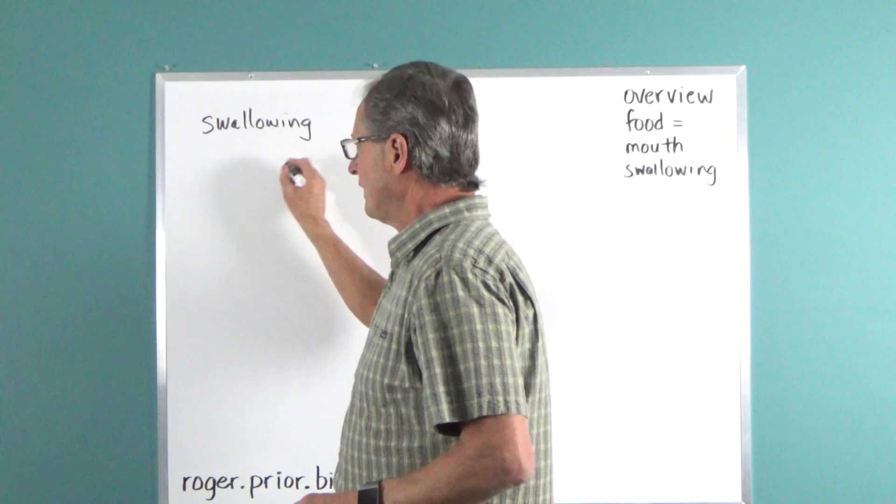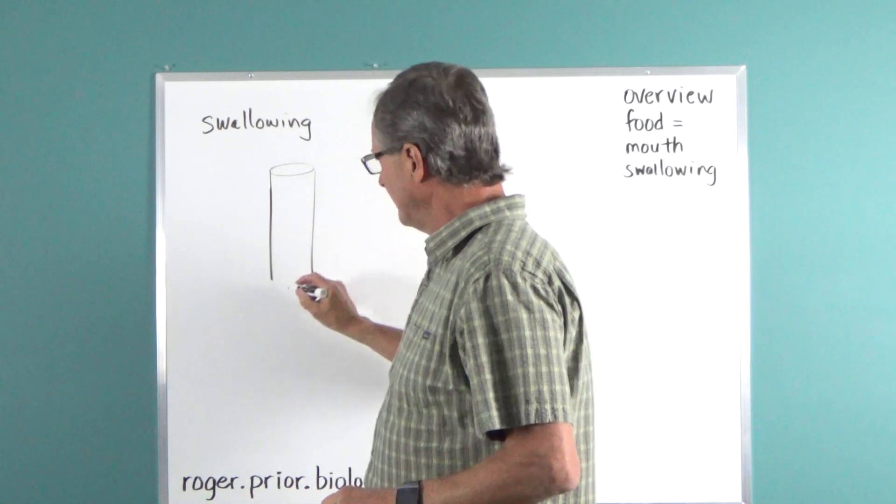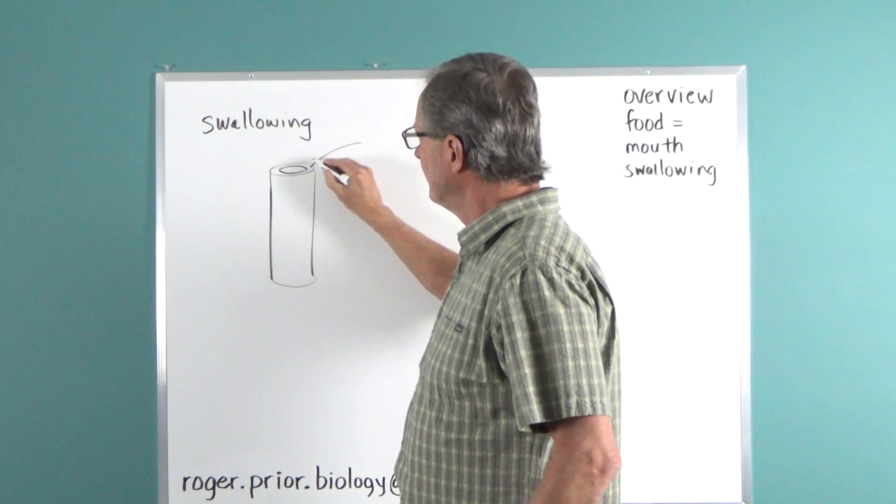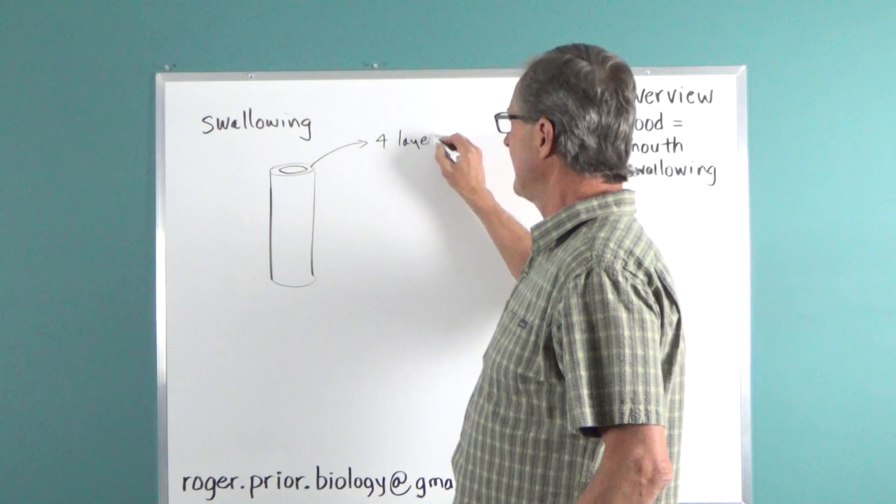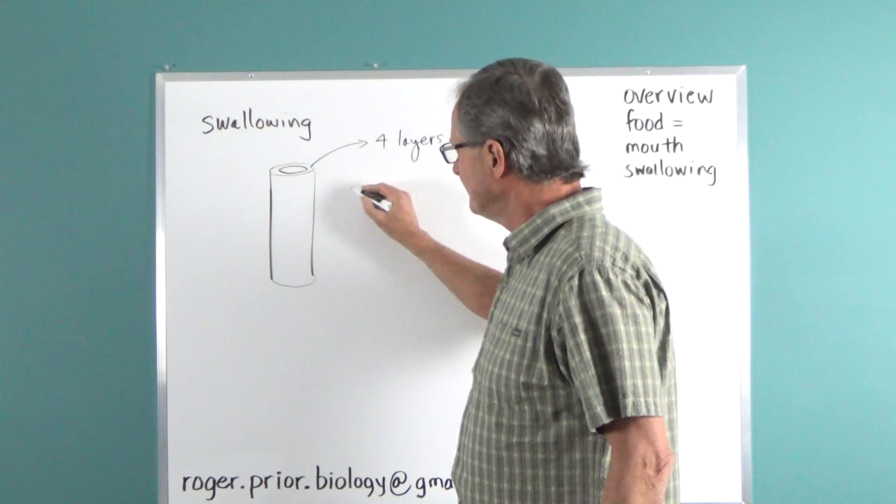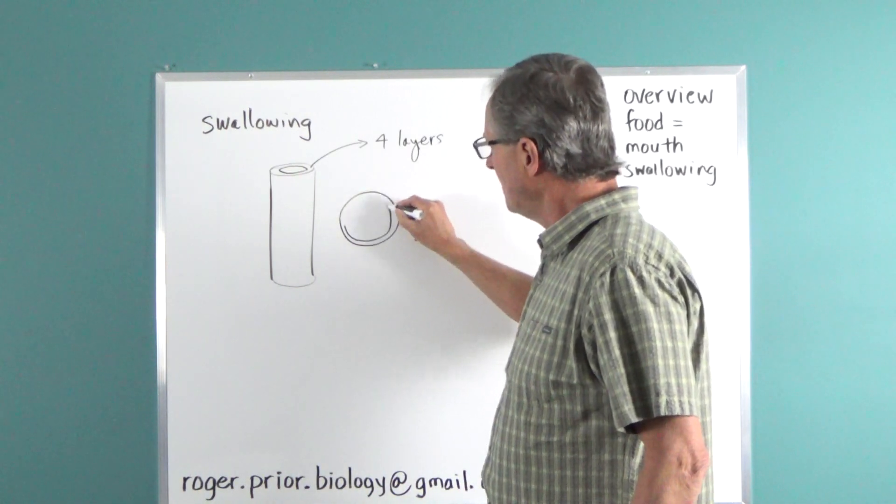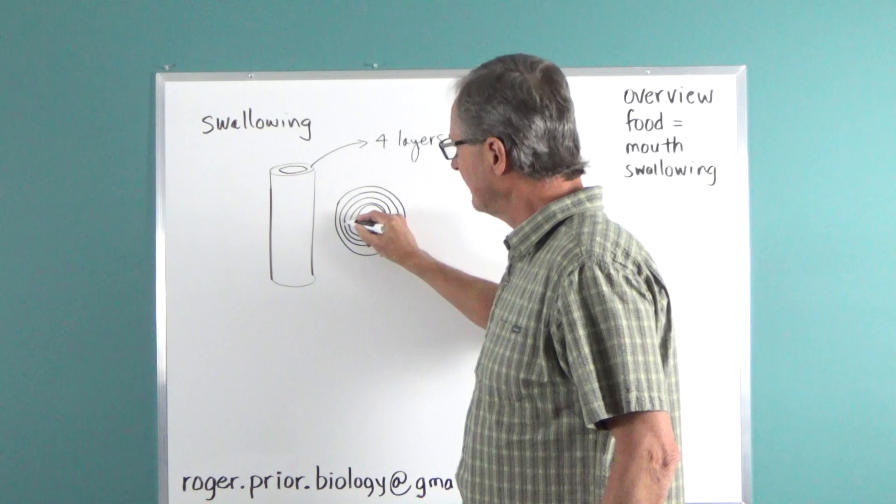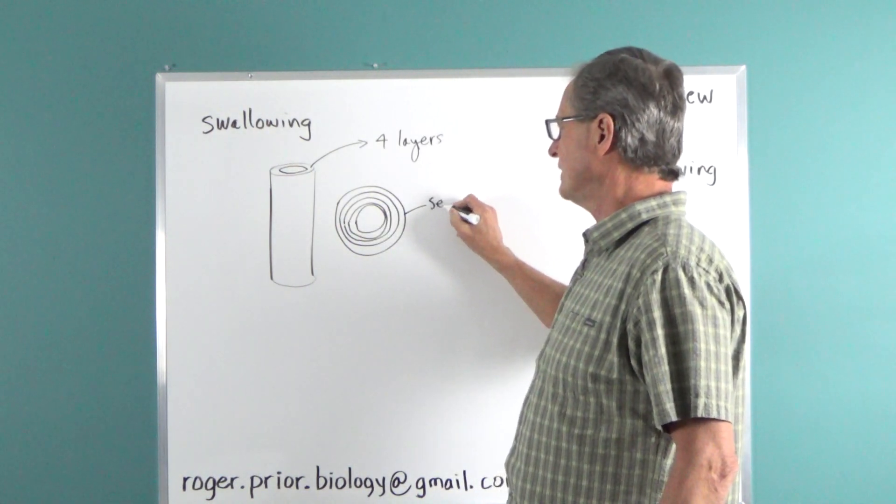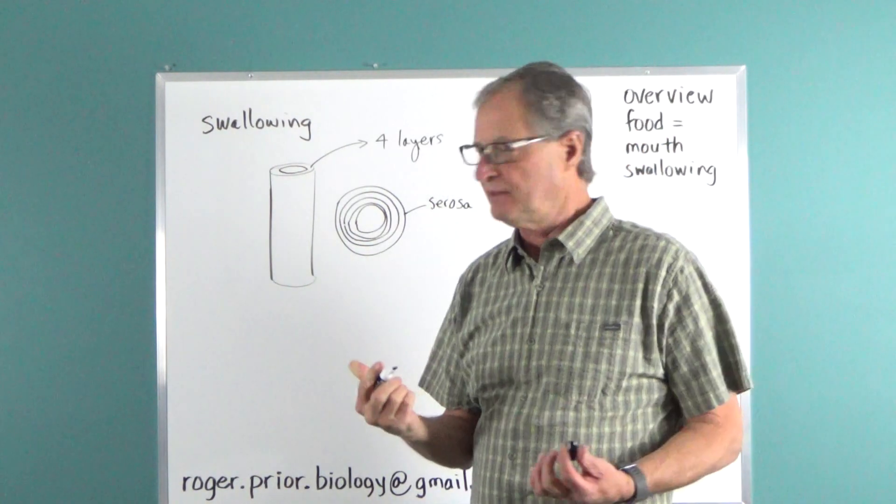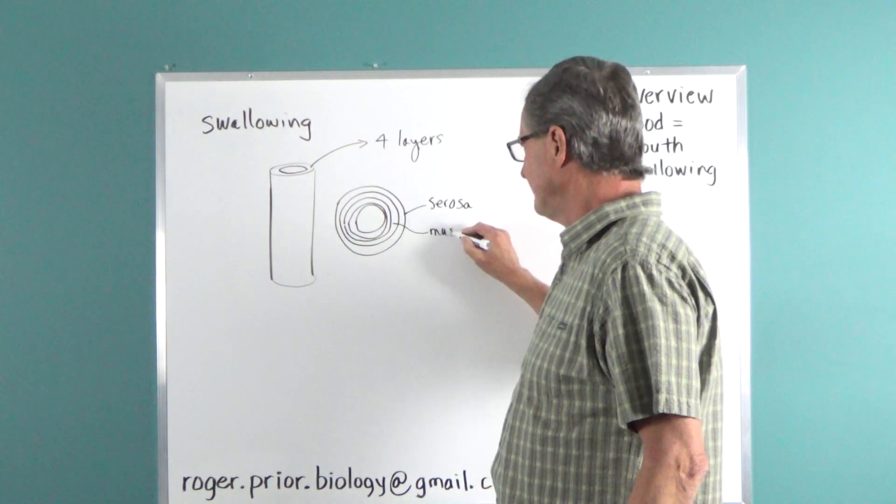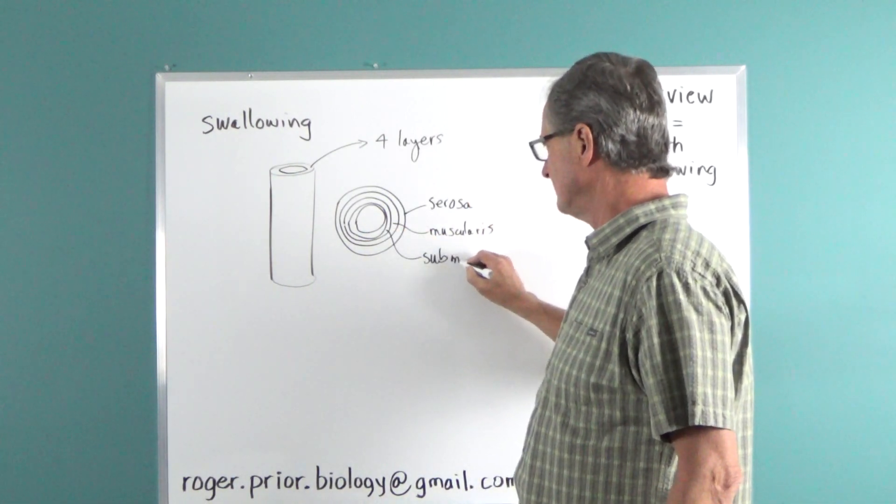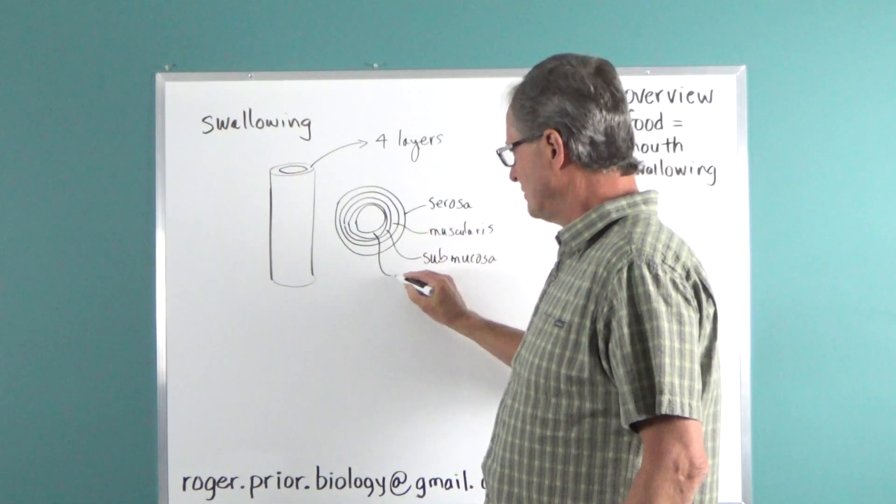And if you think now, we've got a tube. I'm not going to draw the mouth, but here's our tube. This is our esophagus going down like that. The walls of this tube have got four layers. Outside layer, I'll draw it this way. There's four layers there. The outermost layer is a serosa layer. It's just the outer skin. Inside that is a muscular layer. Inside that one is a submucosa. And the innermost layer is the mucosa layer.